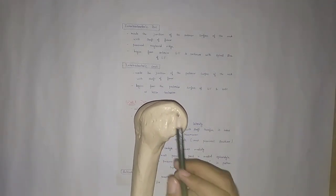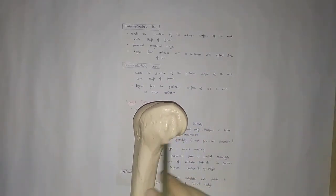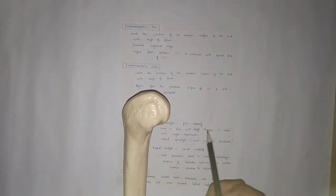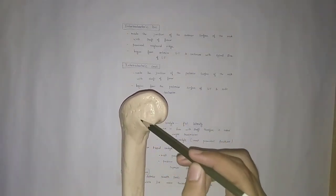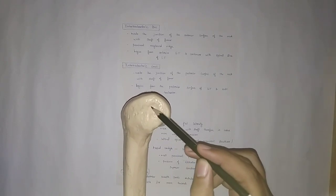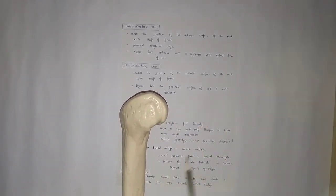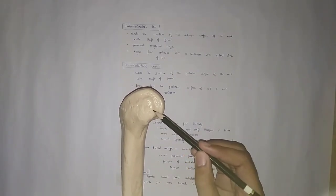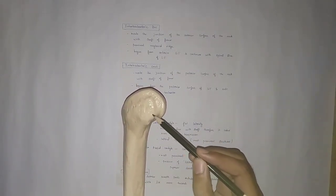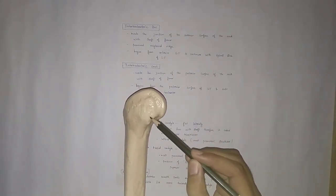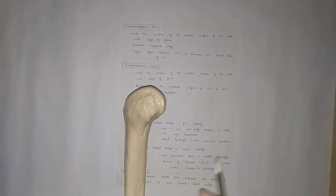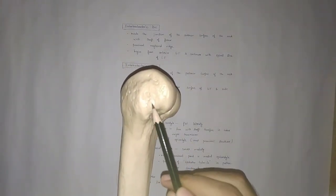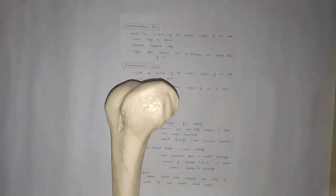The medial condyle is convex. The most prominent structure on the medial surface is the medial epicondyle. Posteriorly to the medial epicondyle, a tubercle is present — we call it the adductor tubercle. This prominent structure is known as the adductor tubercle.